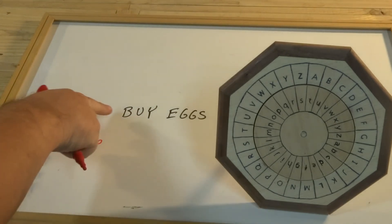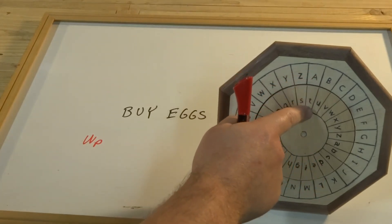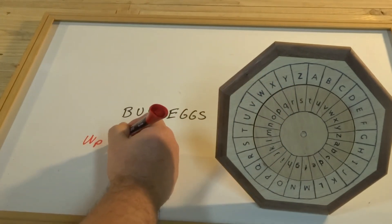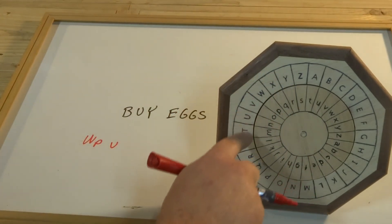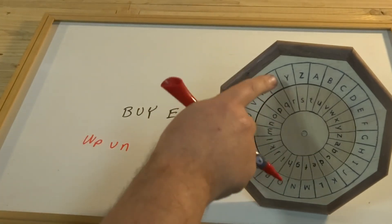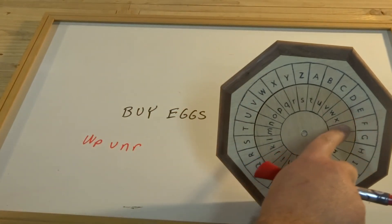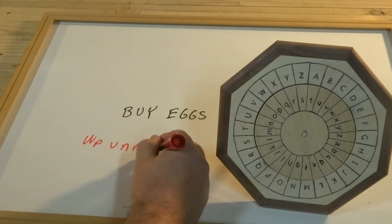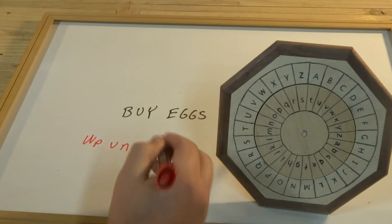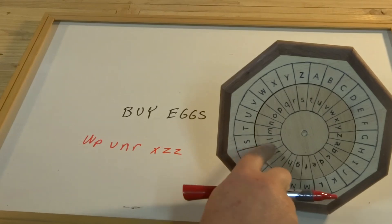Then we look for each letter of our message on the outer ring, and we write down the corresponding letter from the inner ring. So B is U, U is N, Y is R, E is X, G is Z, another G, also Z, and then finally S is L.